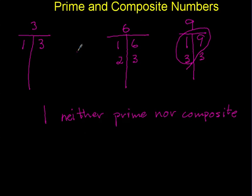The reason for that is if we put it on a factor T, 1 times 1 is 1. We don't use them twice. There's only one factor. In order for it to be prime, it has to have two factors. So 1 is neither prime nor composite.